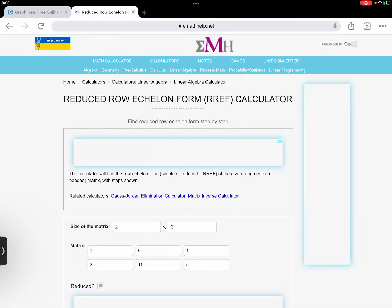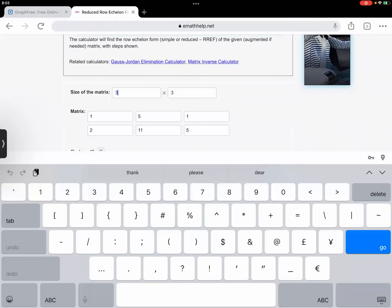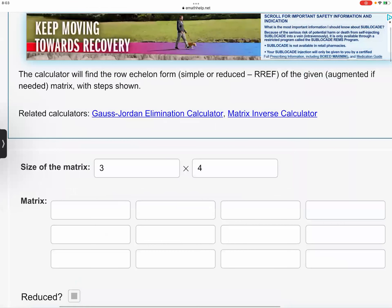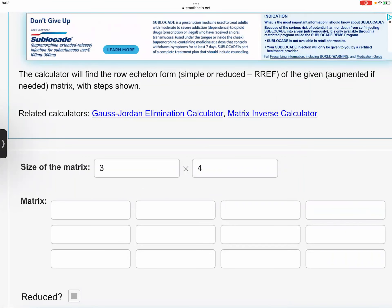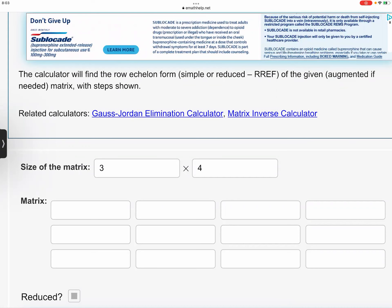So what you can do, you can just go ahead and choose the size of the matrix. And we'll say it's three by four, three rows and four columns. And then once you do that, it automatically pops up the three rows and four columns. And then if you need to solve it, you can just go ahead and type in the numbers that you need to type in.